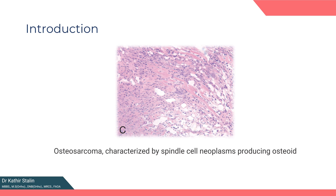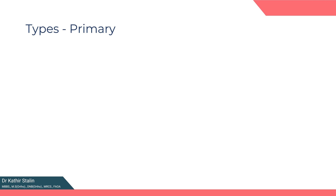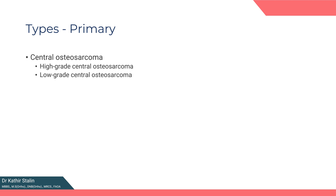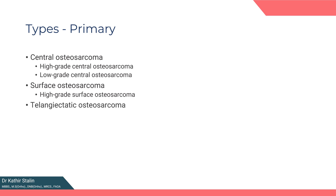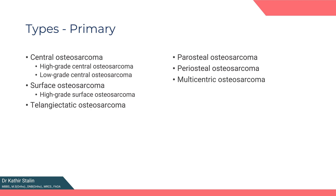Osteosarcoma is characterized by spindle cell neoplasms producing osteoid. Several forms exist for this disease, each with its own distinct features. In primary types, we encounter high-grade central sarcoma, low-grade central sarcoma, surface osteosarcoma which could be high-grade or low-grade, and telangiectatic osteosarcoma. Other variants include parosteal osteosarcoma, periosteal osteosarcoma, and multicentric osteosarcoma.